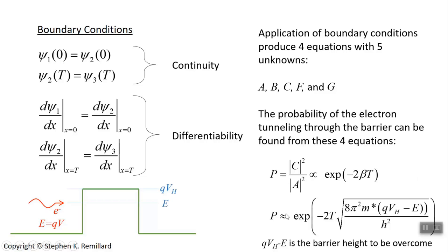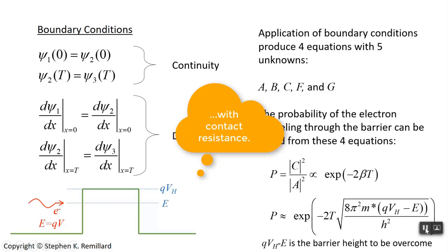This is the probability that an electron tunnels through the barrier — expressed in terms of the barrier thickness t, the effective mass of the electron, the barrier height qV sub h in electron volts, the electron's energy E, and Planck's constant H. We're going to use this next to talk about contact resistance, which is a very important concept for the metal-oxide-semiconductor capacitor — the MOS capacitor. We'll pick up next time with contact potential.